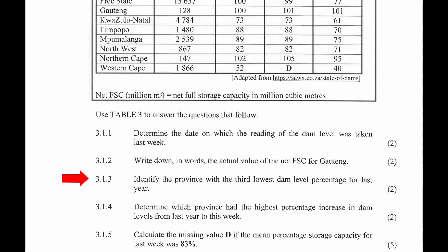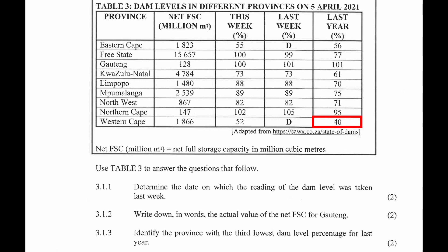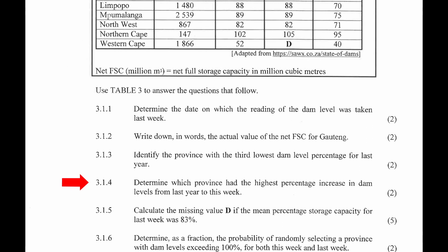Question 3.1.3: Identify the province with the third lowest dam level percentage for last year. From column 5 in the table we see that Western Cape had the lowest dam level, Eastern Cape had the second lowest dam level, and KwaZulu-Natal had the third lowest dam level. So the correct answer is KwaZulu-Natal.